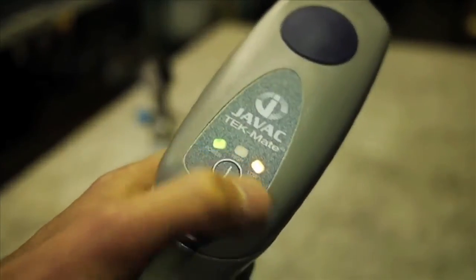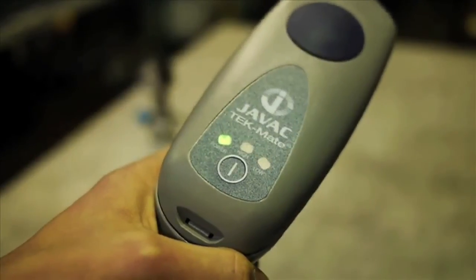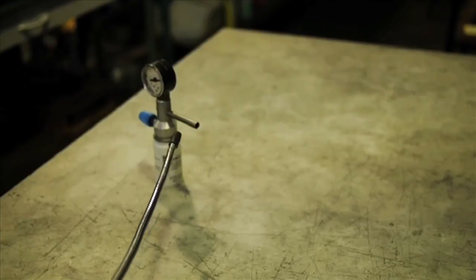The next step is to switch the Techmate to low sensitivity mode by tapping the power button once. Using this mode, you can hone in on the specific source of your leak.